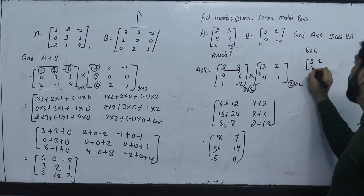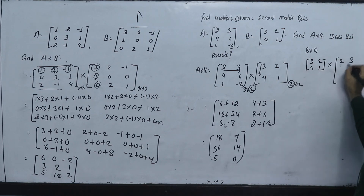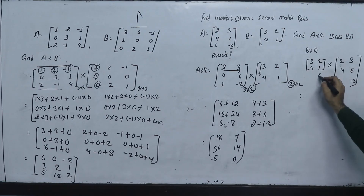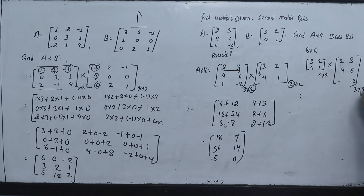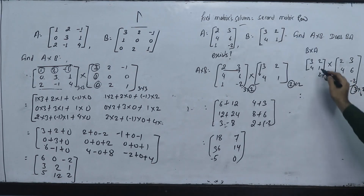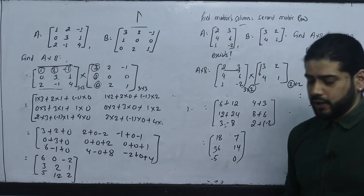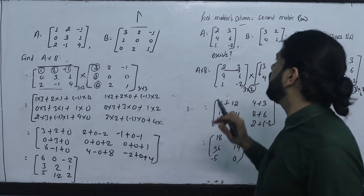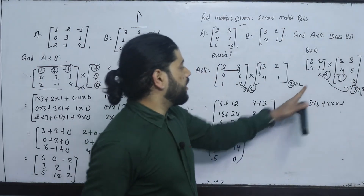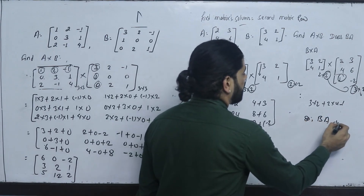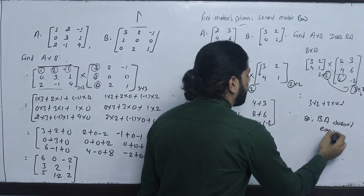Now checking B×A: matrix B is 3, 2, 4, 1 (2×2), and matrix A is 2, 3, 4, 6, 1, minus 2 (2×3). The first matrix columns equal 2, and the second matrix rows equal 2, so multiply gives a 2×2 by 2×3 result. But since the first matrix column count does not match second matrix row count, B×A does not exist.